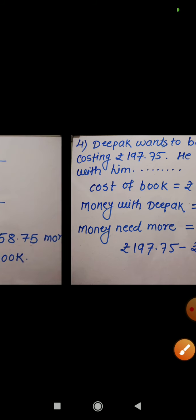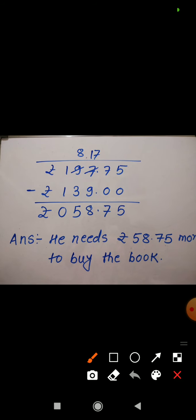So see the difference. See here I have subtracted 139 rupees 00 paise from the cost of book which is 197 rupees 75 paise. See the subtraction: 5 minus 0 is 5, 7 minus 0 is 7, then there is a decimal point. So I have put the decimal point just below the decimal point.